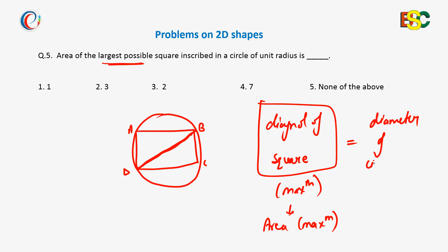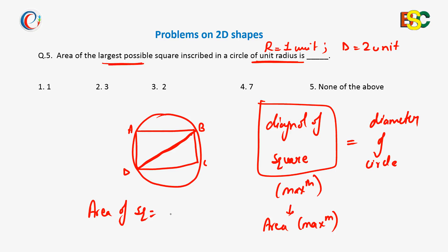The diagonal of the square is maximum when it equals the diameter of the circle — only then is the area of the square maximum. We know the radius is unit radius, so r = 1 unit, which means the diameter is 2 units.